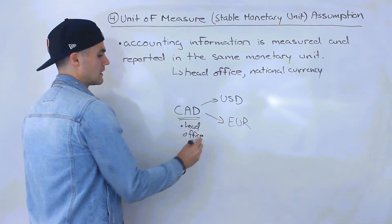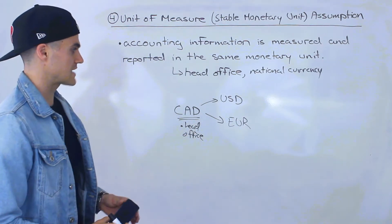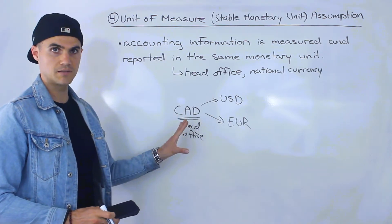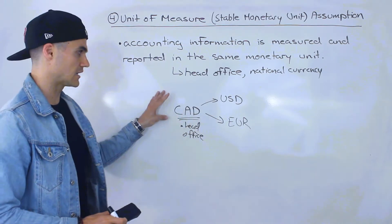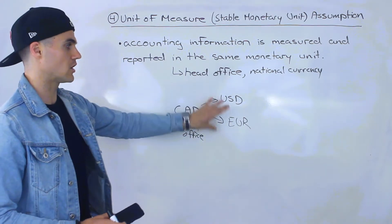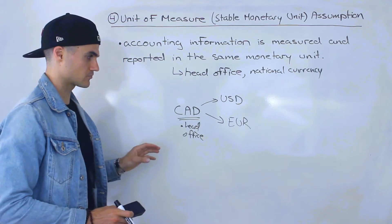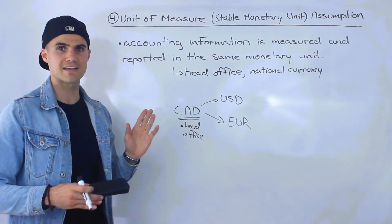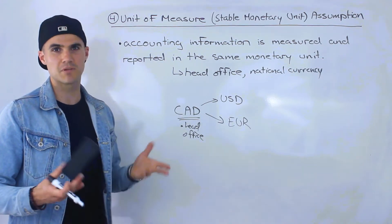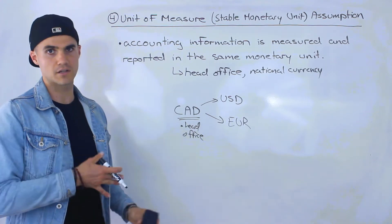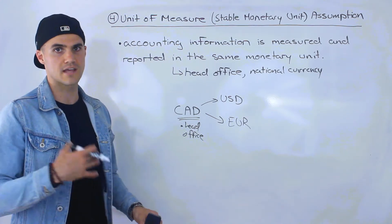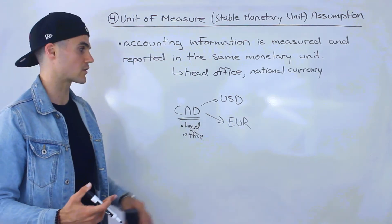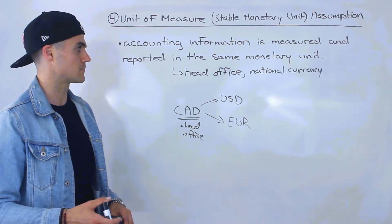If you were to make your financial statements and have all of these multiple currencies on it — Canadian dollars, USD, and Euros — then it's not going to be as understandable. It's going to be more confusing, and you're going to be sacrificing a lot of the qualitative characteristics of financial information that we've talked about before.